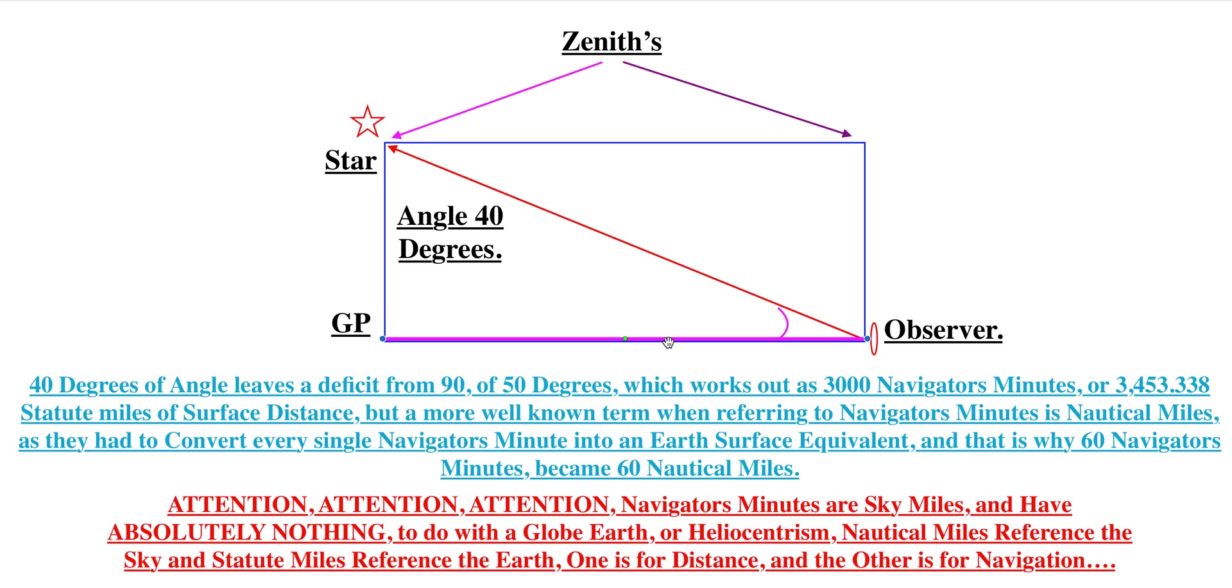That's what's going on. So it has nothing to do with the globe, nothing to do with the center of anything or any other idiotic claim. They're navigator's minutes. That's why there are 60 of them per degree, because 60 nautical miles per degree, because there's 60 navigator's minutes per degree.